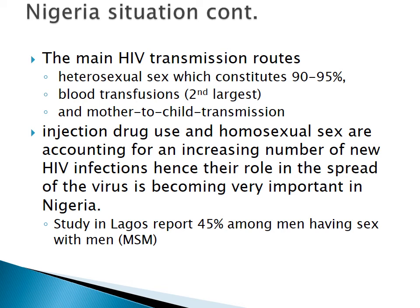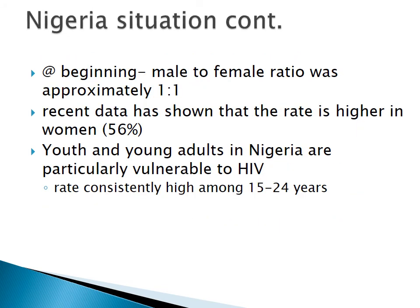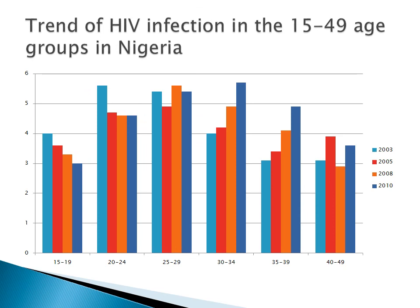Injecting drug use and homosexual sex account for an increasing number of new HIV infections. Youth and young adults in Nigeria are particularly vulnerable — most in the age group 15 to 24. This course aims to provide information early enough so that students can remain HIV-negative and also educate their peers, communities, and friends to contribute to controlling the spread of HIV.